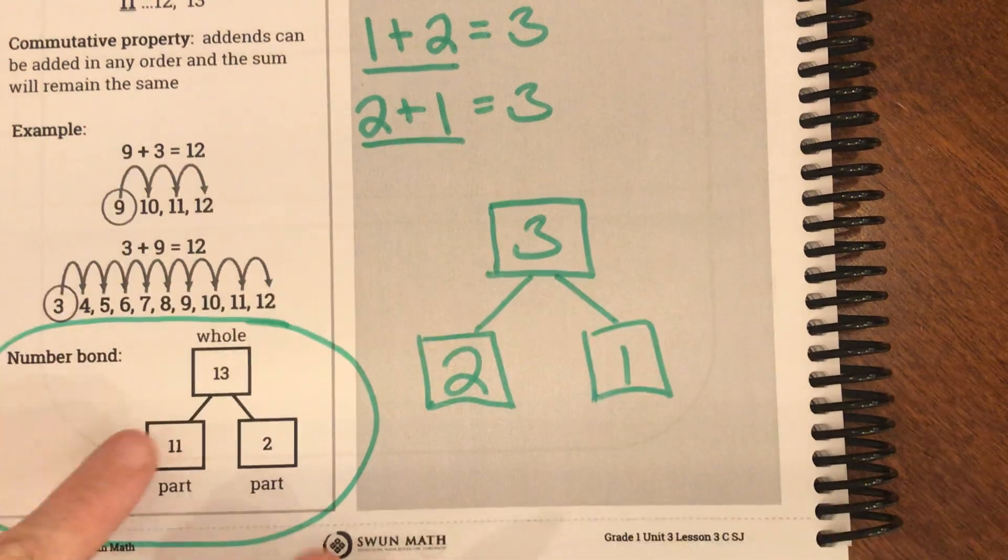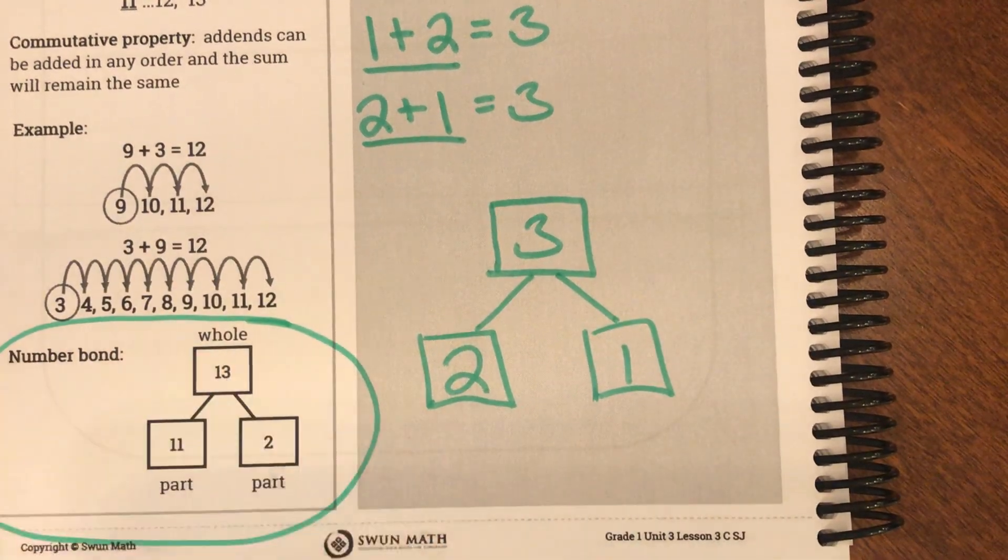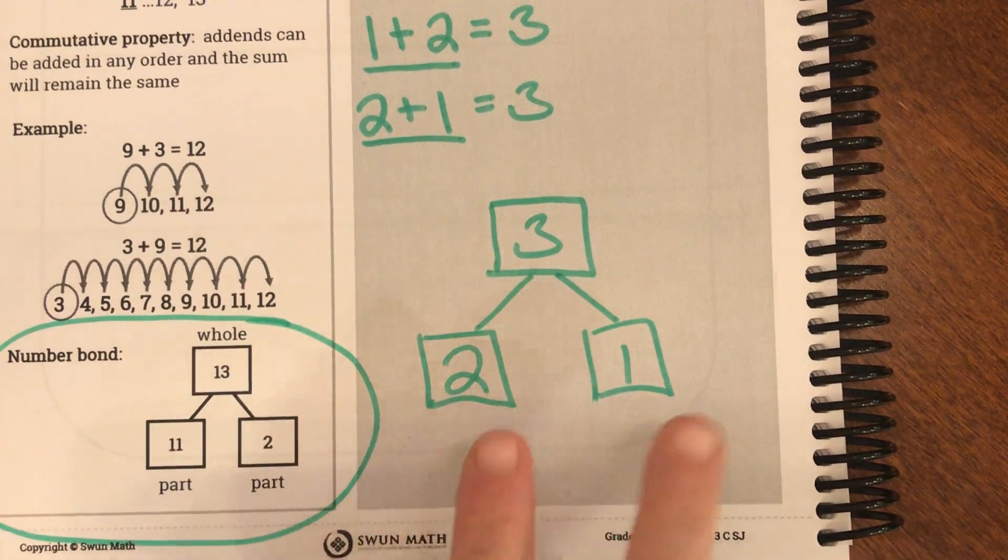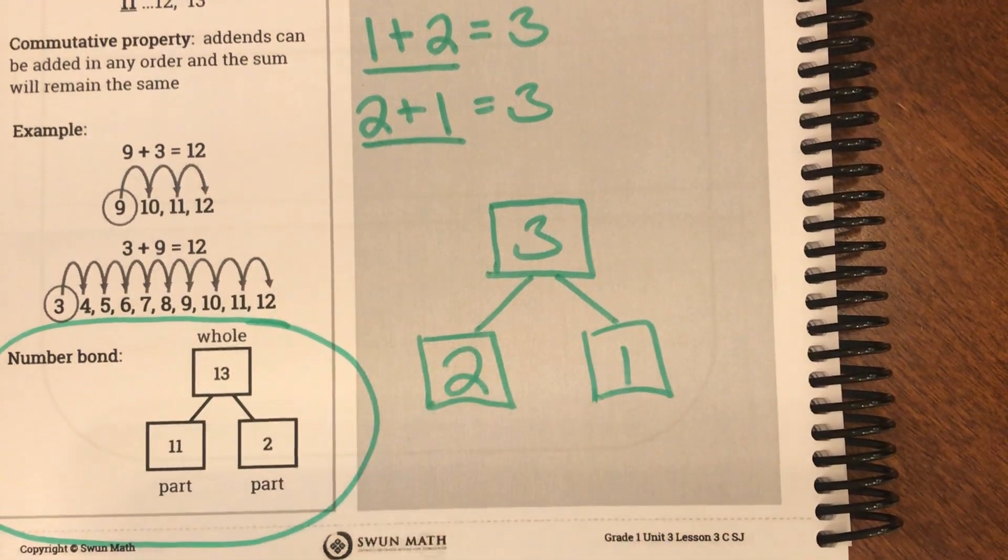So 2 plus 1 equals 3. That's what a number bond is. So 2 and 1 equal 3, 11 plus 2 equals 13. So in a number bond the whole number is at top or the sum and these are our addends or our parts.